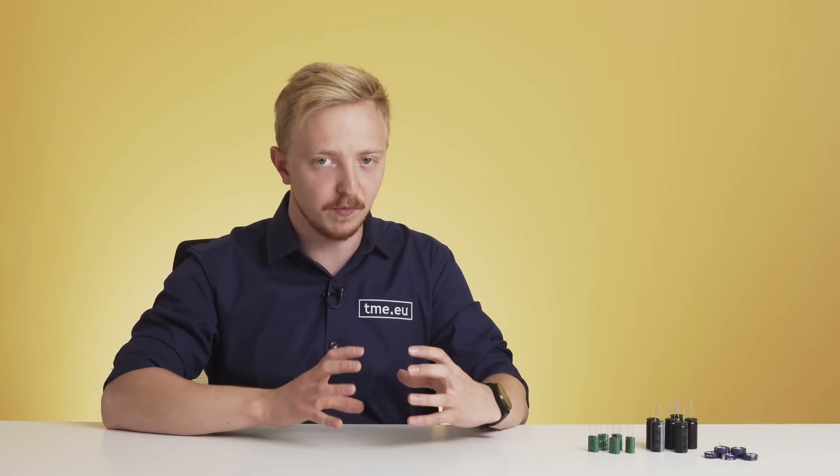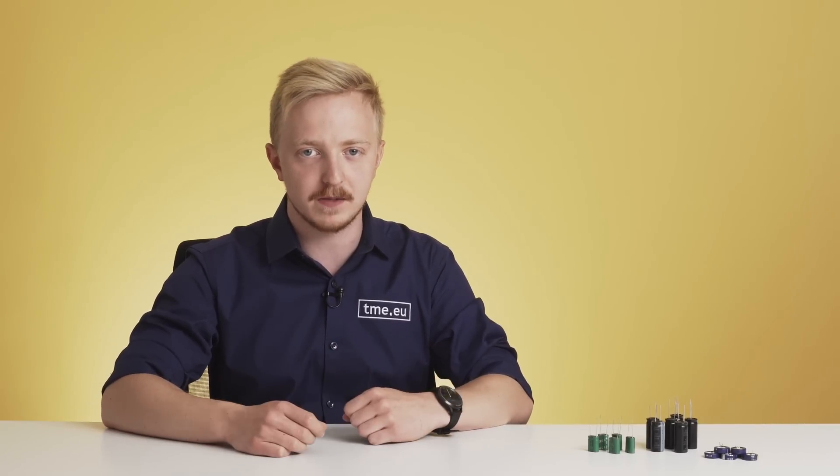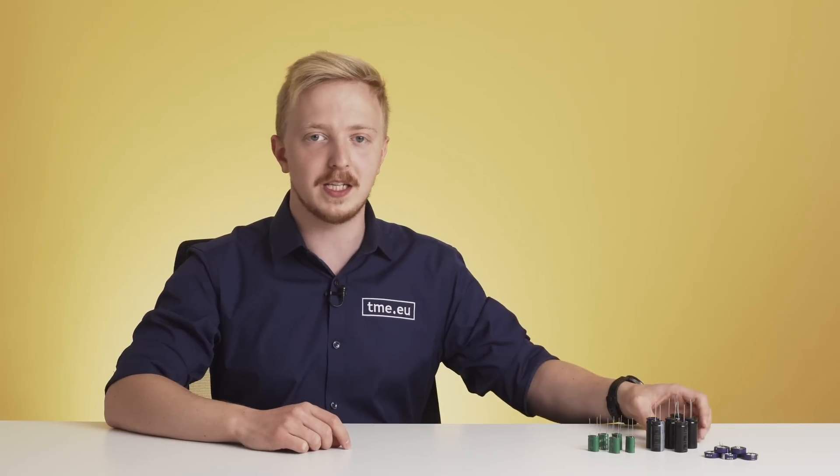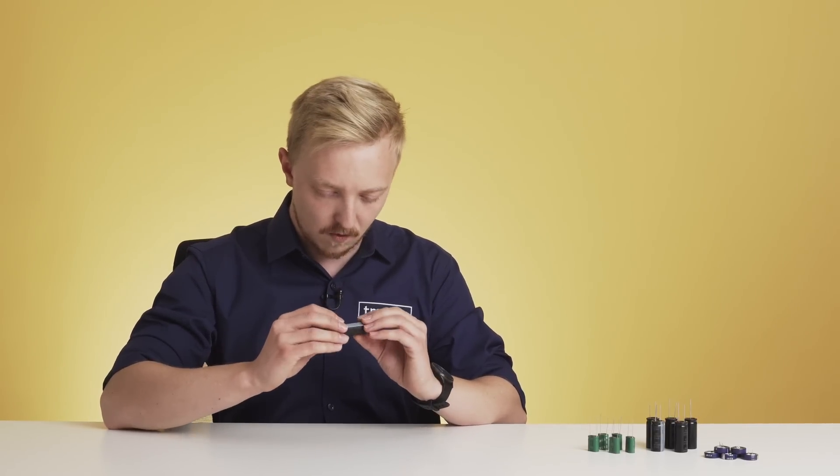To safely discharge a capacitor, you'll need a resisting component. It will take the power stored inside and slowly transform it into other energy. The first information you need to find an adequate resistor is the capacity of a discharged element. It's a parameter that tells how big a charge can be accumulated. It's measured in farads. To make this part easy, the manufacturers put that number on every capacitor, right here.